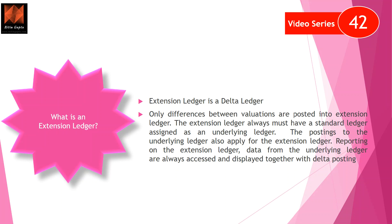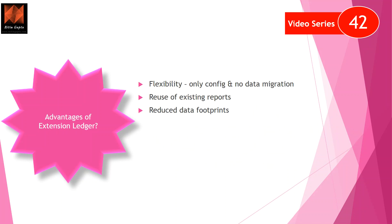In reporting on the extension ledger, the data from the underlying ledger is always accessed and displayed together with delta postings. You post on the standard ledger and it automatically applies to the extension ledger, but anything posted specifically on the extension ledger will not go to the standard ledger. When you pull the report for the extension ledger, you get standard ledger postings plus any additional postings done on the extension ledger.